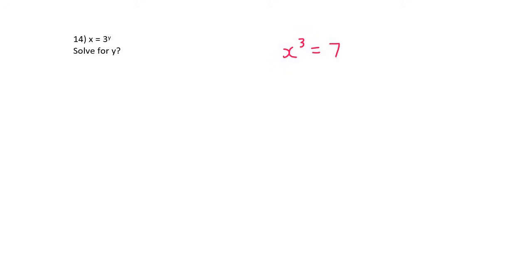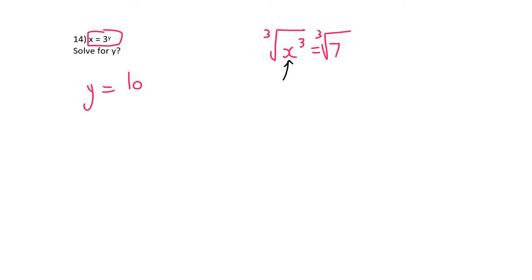If you had x³ = 7, you'd take the cube root on both sides to find x. But when the unknown is an exponent, we use logs. The difference: here x is the base, but if x is the exponent, use logs. The way logs work: make the exponent equal to log of the base (which is 3), then whatever is on the other side comes next. That is the final answer.